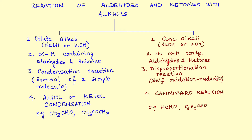The first set of reactions with dilute alkali is called aldol condensation. Condensation means removal of a simple molecule, though as I'll explain later it's more of a nucleophilic addition reaction. The Cannizzaro reaction, on the other hand, is an example of a disproportionation reaction — a molecule undergoes oxidation as well as reduction at the same time, giving you two products.